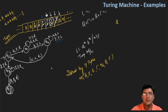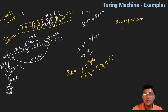First is Q, which means the set of all states. This is the diagram we have made, and this is the set of states. Those states are Q0, Q1, Q2, Q3, and QF. So these are all the states in the given transition diagram of the Turing machine.